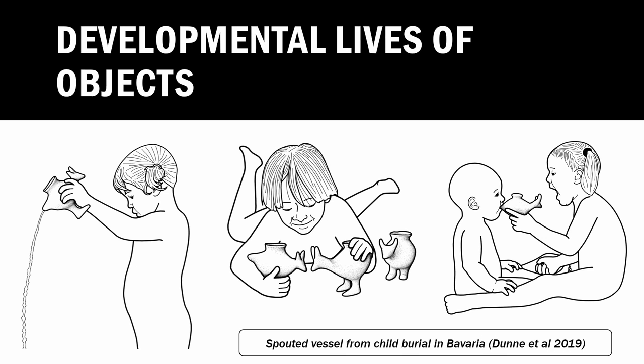As we think about the relationship between children and objects, one thing that stands out is the way objects can change as children develop. For example, these spouted vessels for a one-year-old make an excellent bottle; for a two-year-old, an excellent water toy; for a three-year-old, they can be used in imaginative play; and for a four-year-old, as a tool for the work of child care. The objects grow with children, and their uses change as children grow and develop.